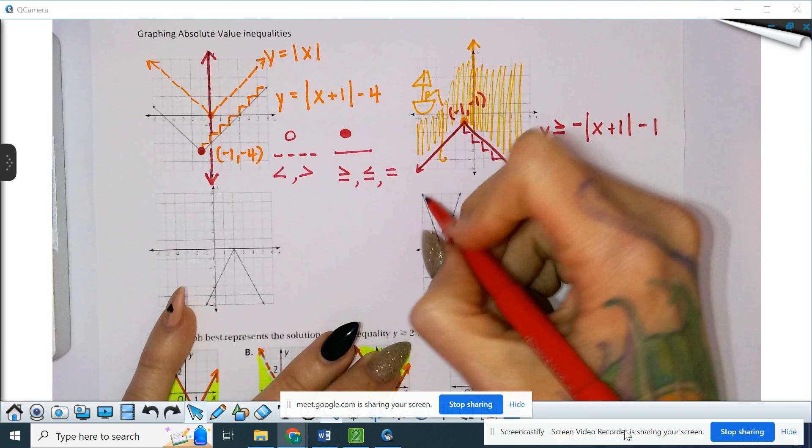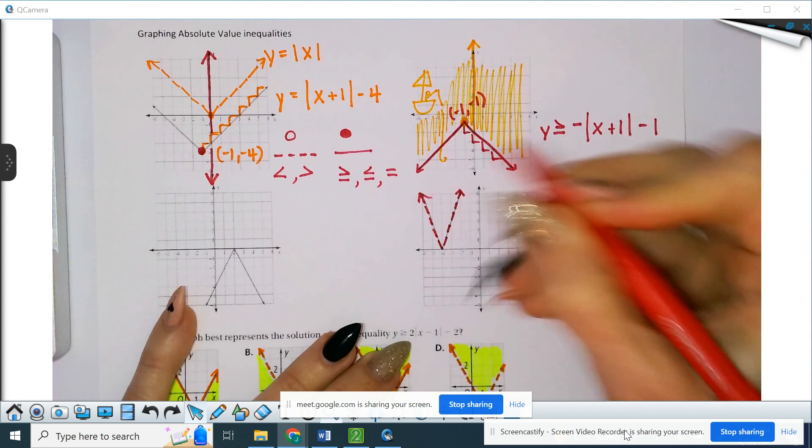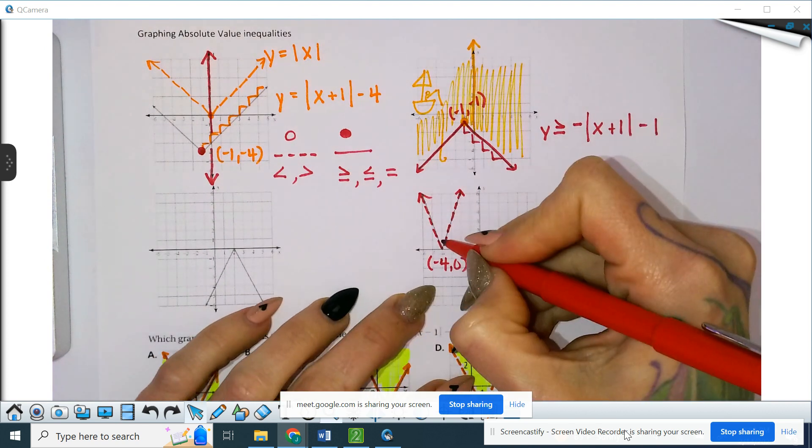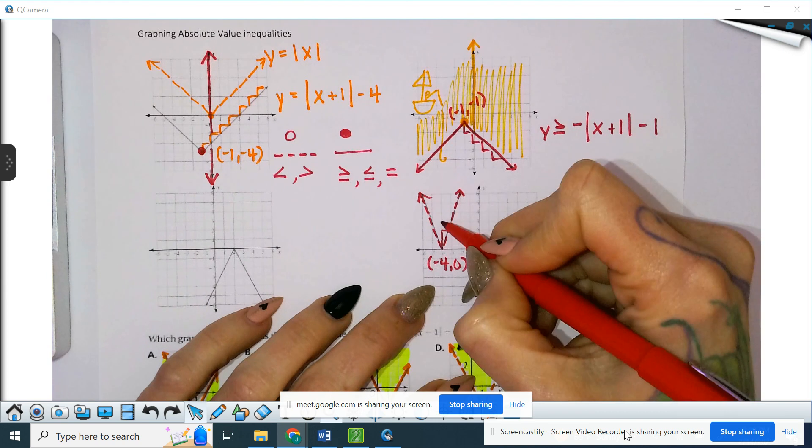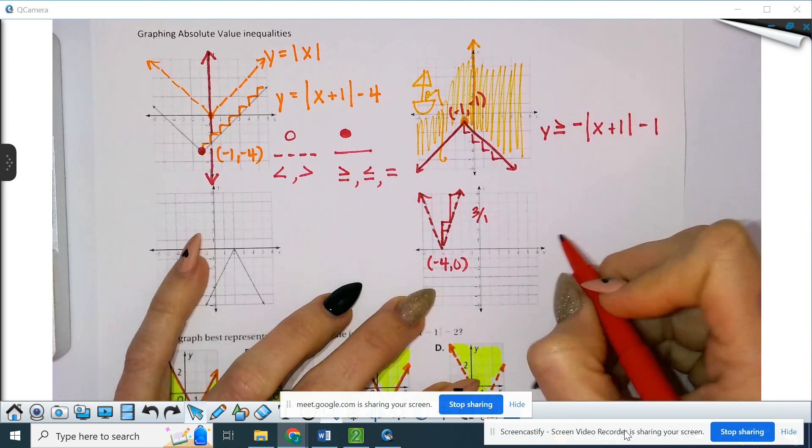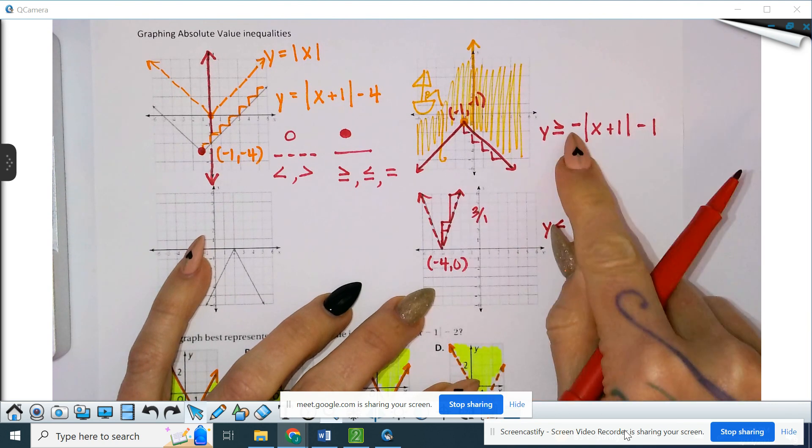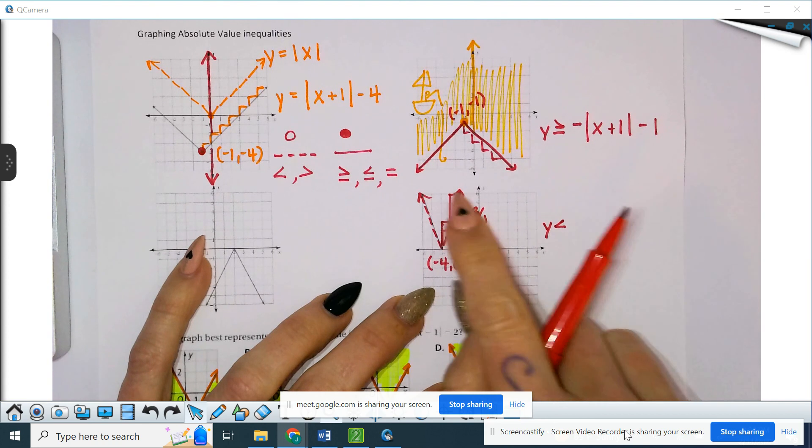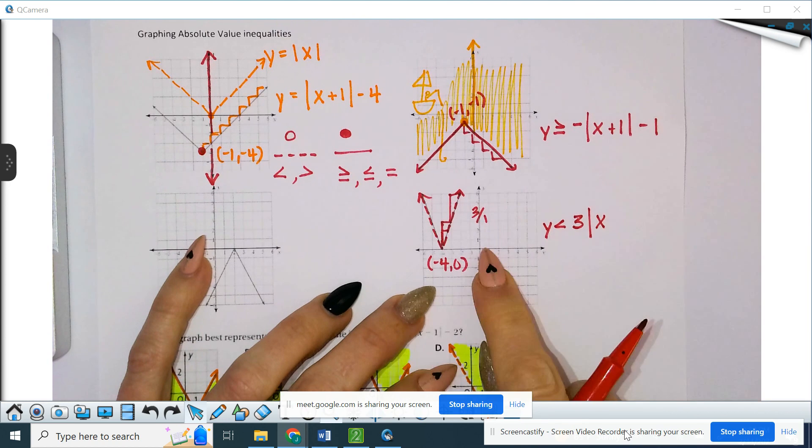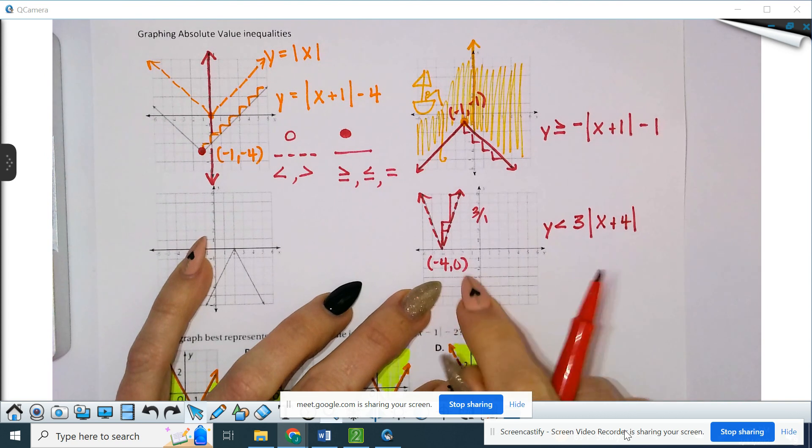If we were to take this guy, we'll make it a dashed line. Our vertex is negative 4, 0. Our rate of change is not a 1 to 1, we'll go up 3 over 1. That's going to be, let's do y is less than, because it's dashed line. It is a positive graph. But it is a 3 to 1, so we're going to put a 3 on the outside. To the left 4, plus 4, and then it did not go up or down, so there's nothing on the outside.